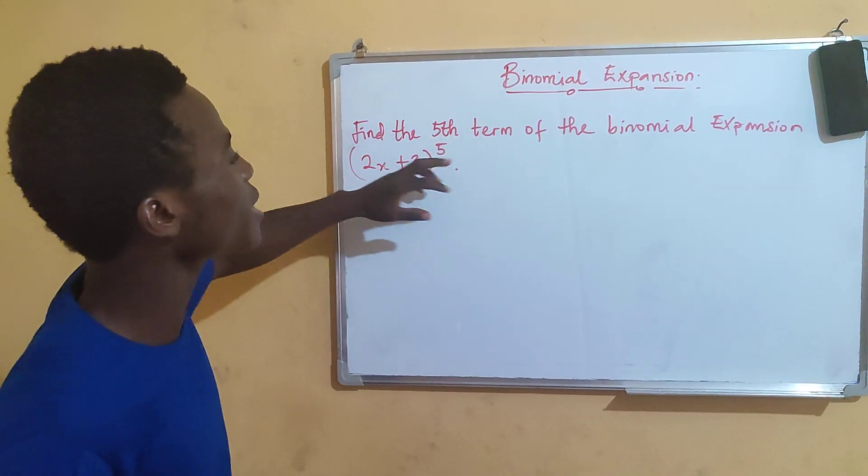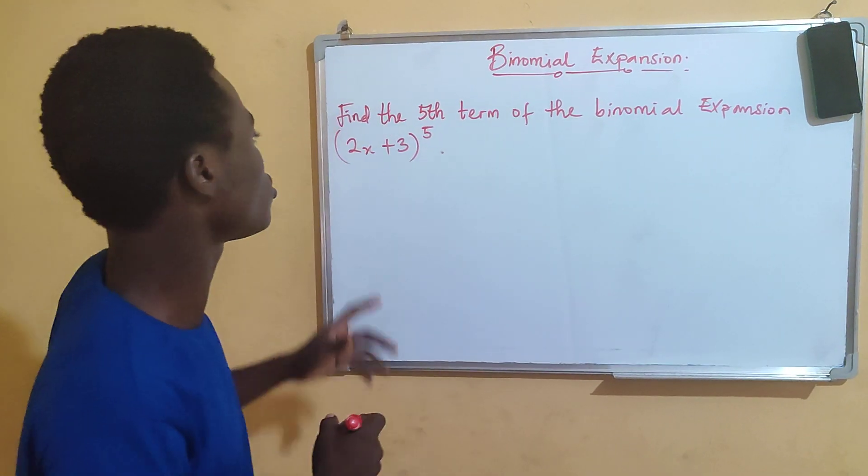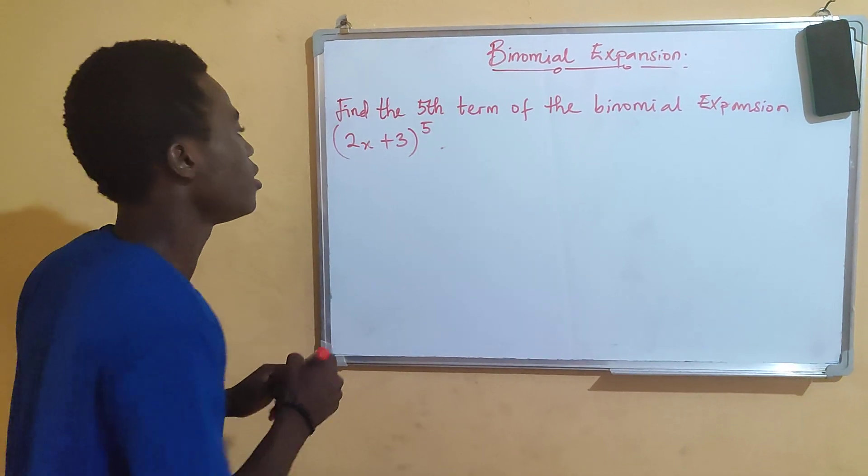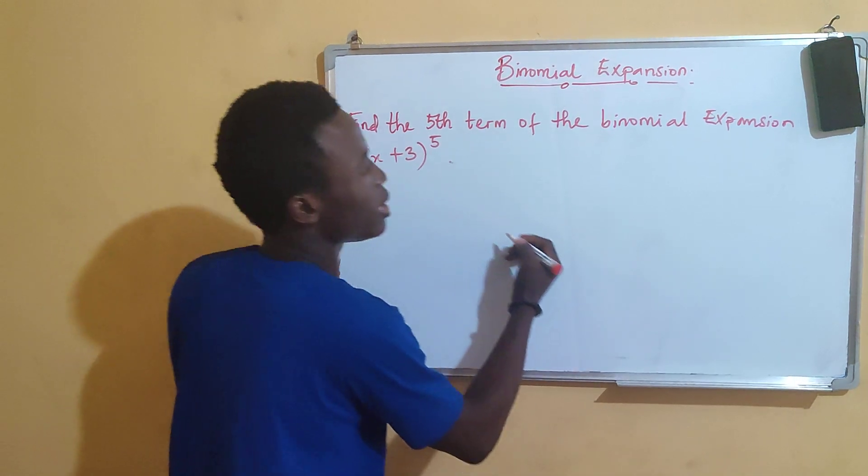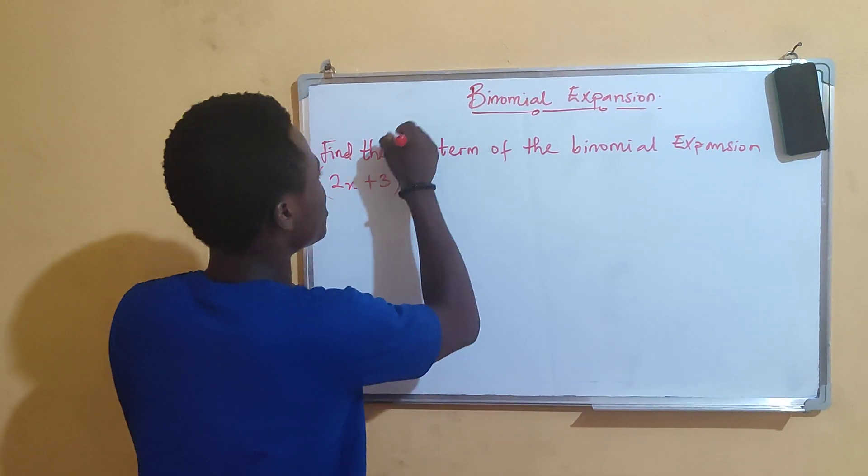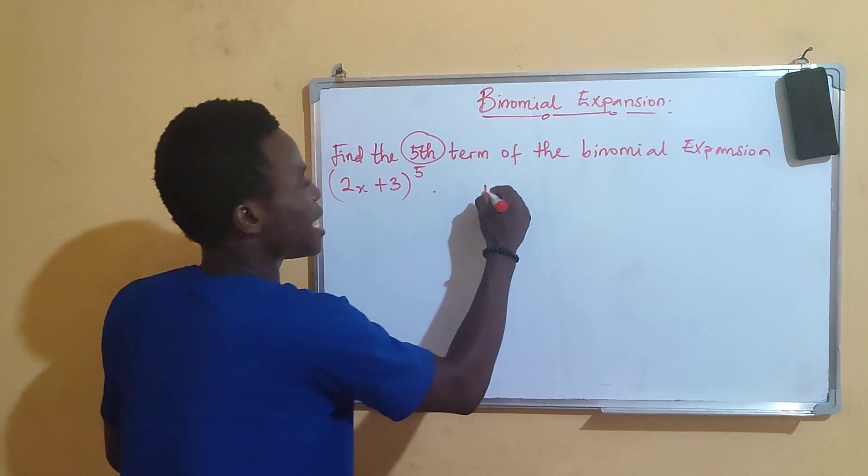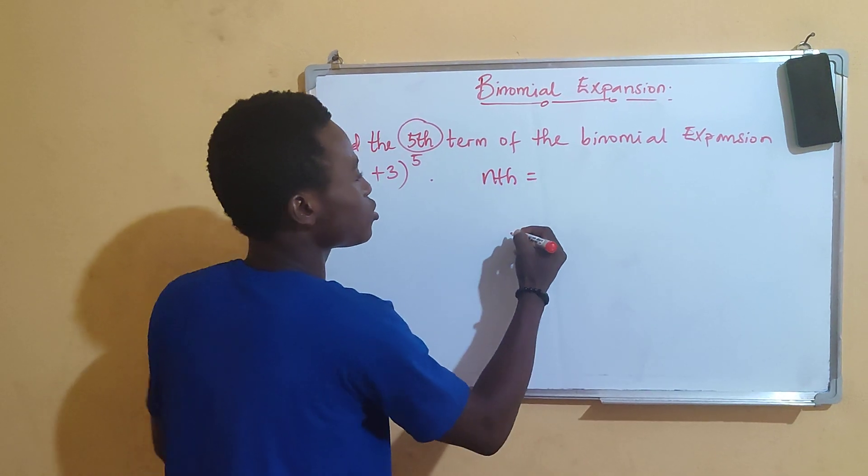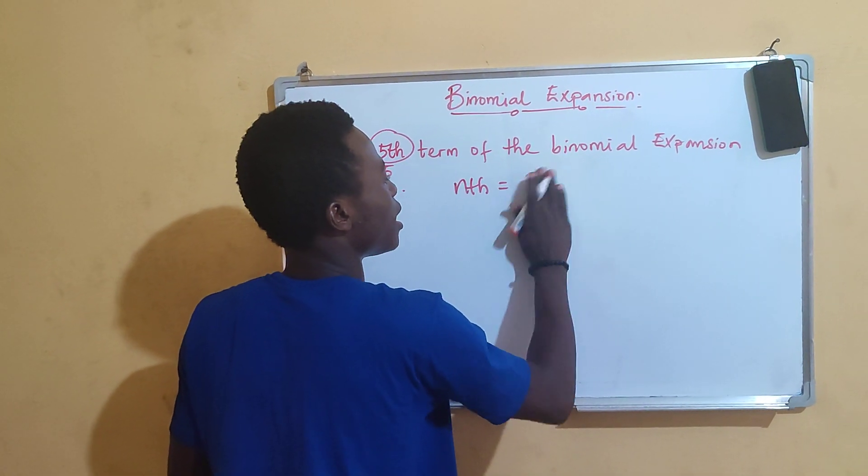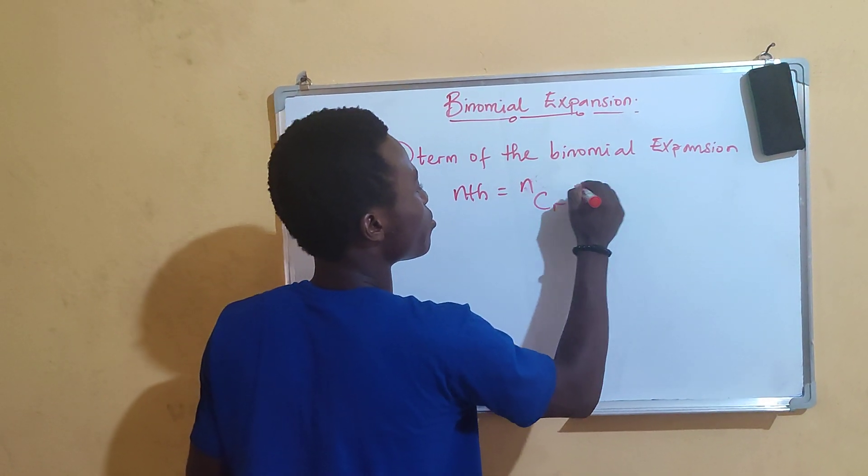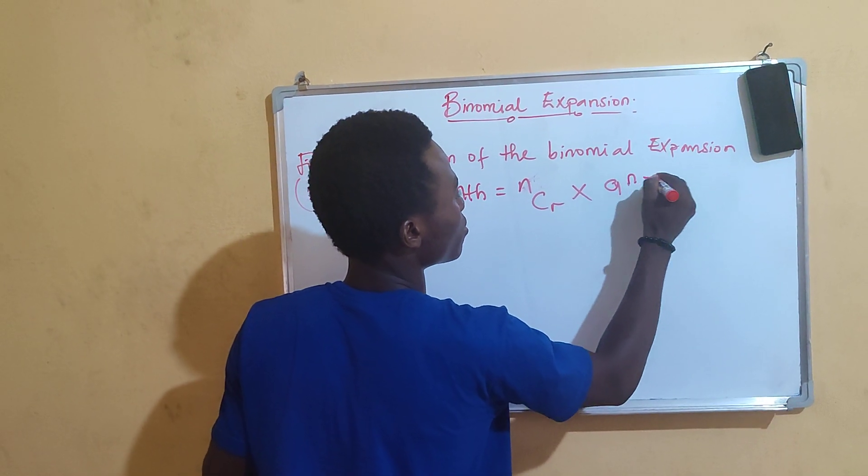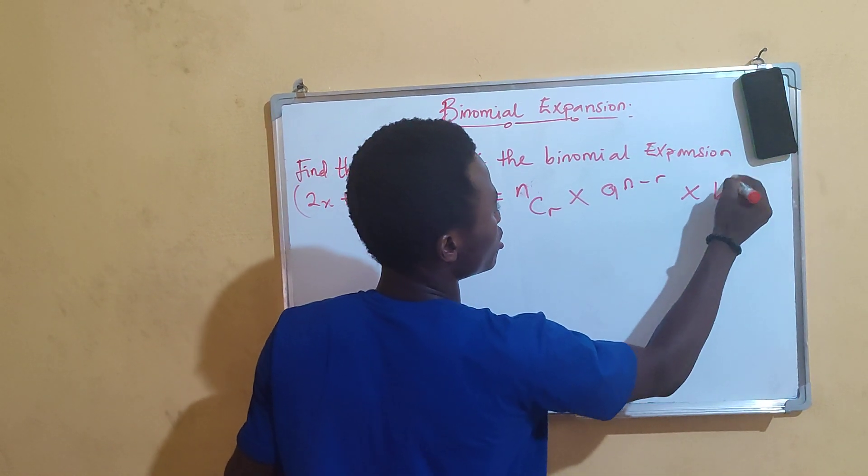The question says find the fifth term of the binomial expansion 2x plus 3 raised to power 5. The formula for the nth term, whenever you see term in binomial, is equals to nCr multiplied by a to the power n minus r multiplied by b raised to power r.